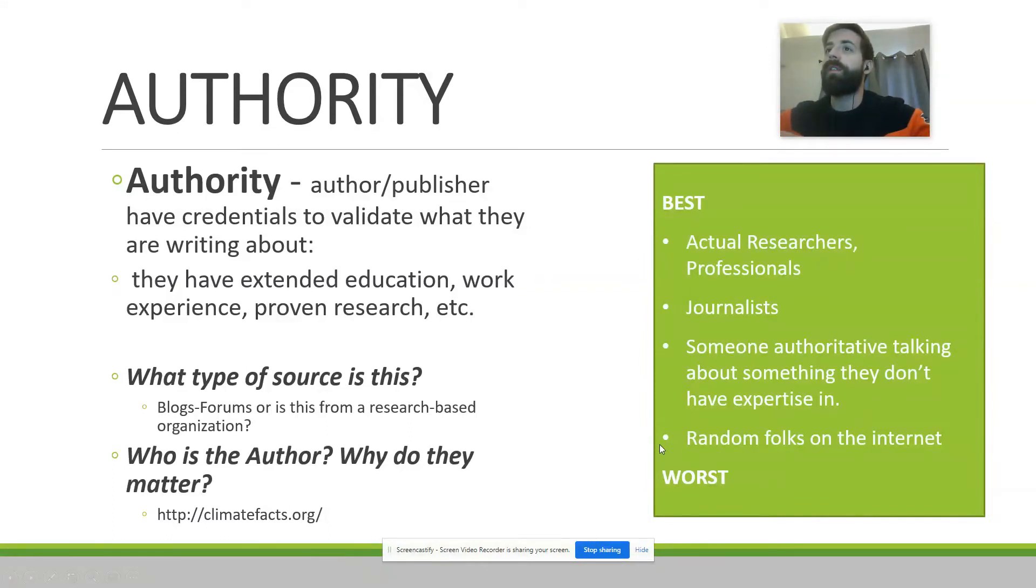There's kind of a quick list of, from best to worst, of different authoritative people. Best people are going to be actual researchers and professionals in their industries. Then we're going to go to journalists. Journalists generally do a lot of good research, especially if they're from quality news publications. They might not be the actual scientists or the professionals doing that study or that work in their field, but they're going to be the ones who are asking these people questions and getting information and deciphering that and publishing information for the relative public to read. Then we're going to go to someone talking about something that they don't have expertise in or random people on the internet. So we really need to be thinking about where information is coming from.